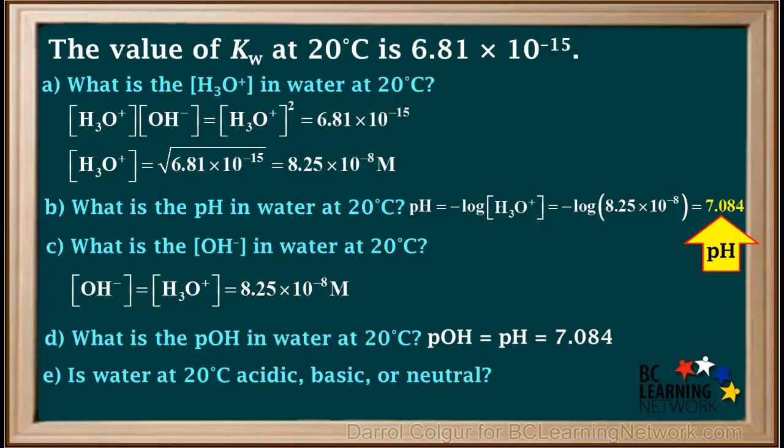Notice the pH is above 7. We're used to thinking that if the pH is above 7, then it's basic. However, 7 is only valid at 25 degrees. Remember, pure water is neutral no matter what the temperature is.